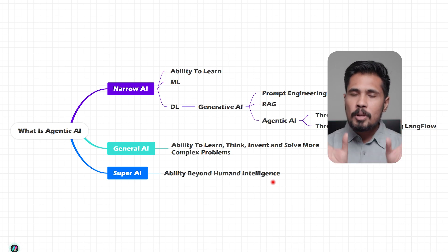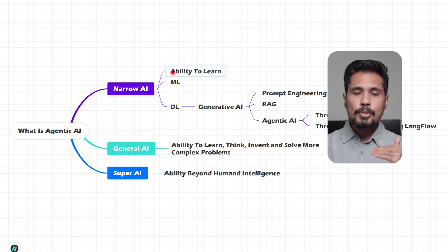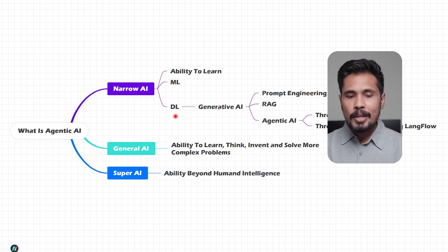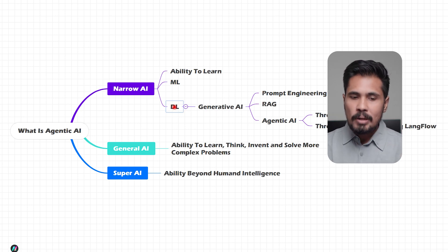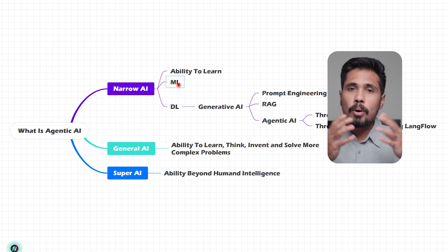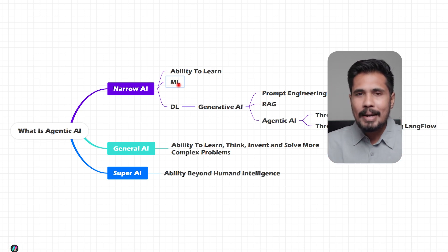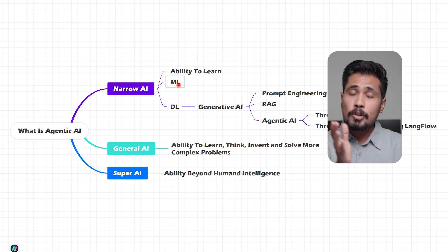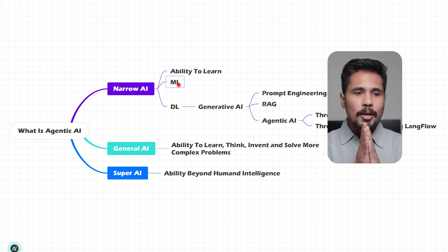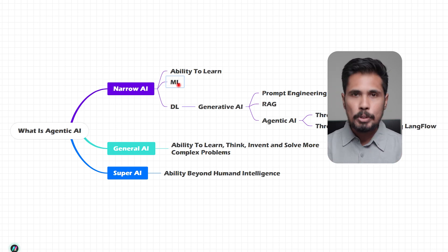Whatever the bubble we have around AI is related to narrow AI. Now this narrow AI contains two parts: machine learning and deep learning. Machine learning is mostly used to perform intelligence or automations around structured data like an Excel sheet — medical data in rows and columns, sales data, any numerical data. You can start building intelligence with the help of machine learning.